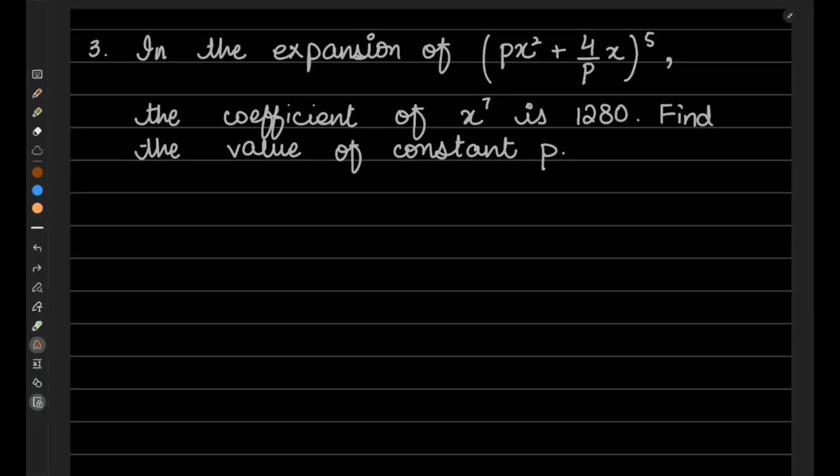Question number three says in the expansion of (px² + 4/px)^5, the coefficient of x^7 is 1280. Find the value of the constant p. Because we can use the term formula, instead of expanding it whole, we will be using this term formula to get to the required term.